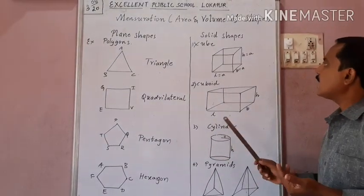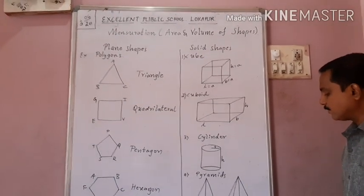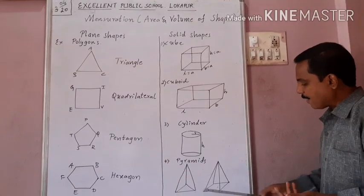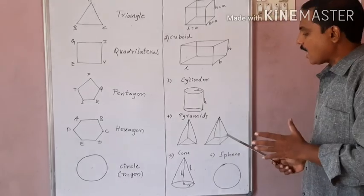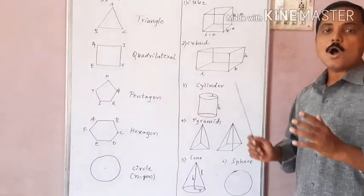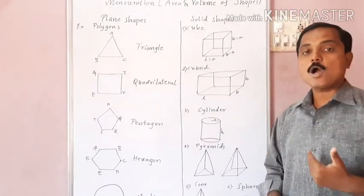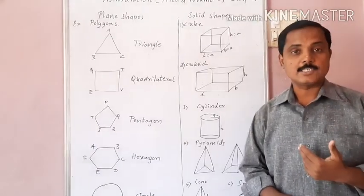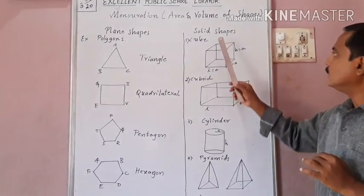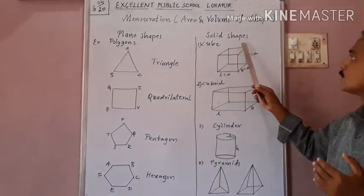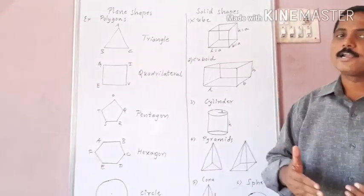There are shapes like cube, cuboid, cylinder, pyramids, and prisms — including triangle-based pyramid, square-based pyramid, cone, and sphere. These are all solid shapes or 3D shapes. They are named 3D shapes because they have all three dimensions: length, breadth, and height. That is why these are called solid shapes and also 3D shapes. Let us study these things in detail.